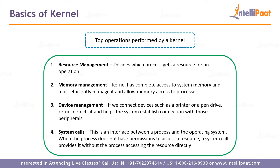The top operations performed by a kernel are: resource management, memory management, device management, and system calls. For resource management, the kernel decides which process gets a resource for operation. If two processes need the same resource, the kernel decides the order to avoid a deadlock situation. It may give the resource to the process that takes less time first, then to the process that takes longer.